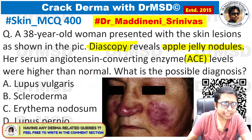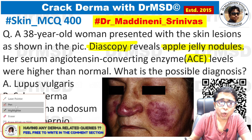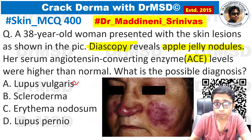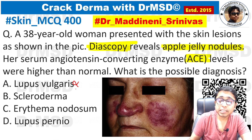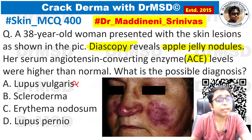By looking at this image and the apple jelly nodules, you should be very careful not to jump into the diagnosis of lupus vulgaris. Apple jelly nodules — you might have memorized that they are seen in lupus vulgaris, which is the most common type of cutaneous tuberculosis.